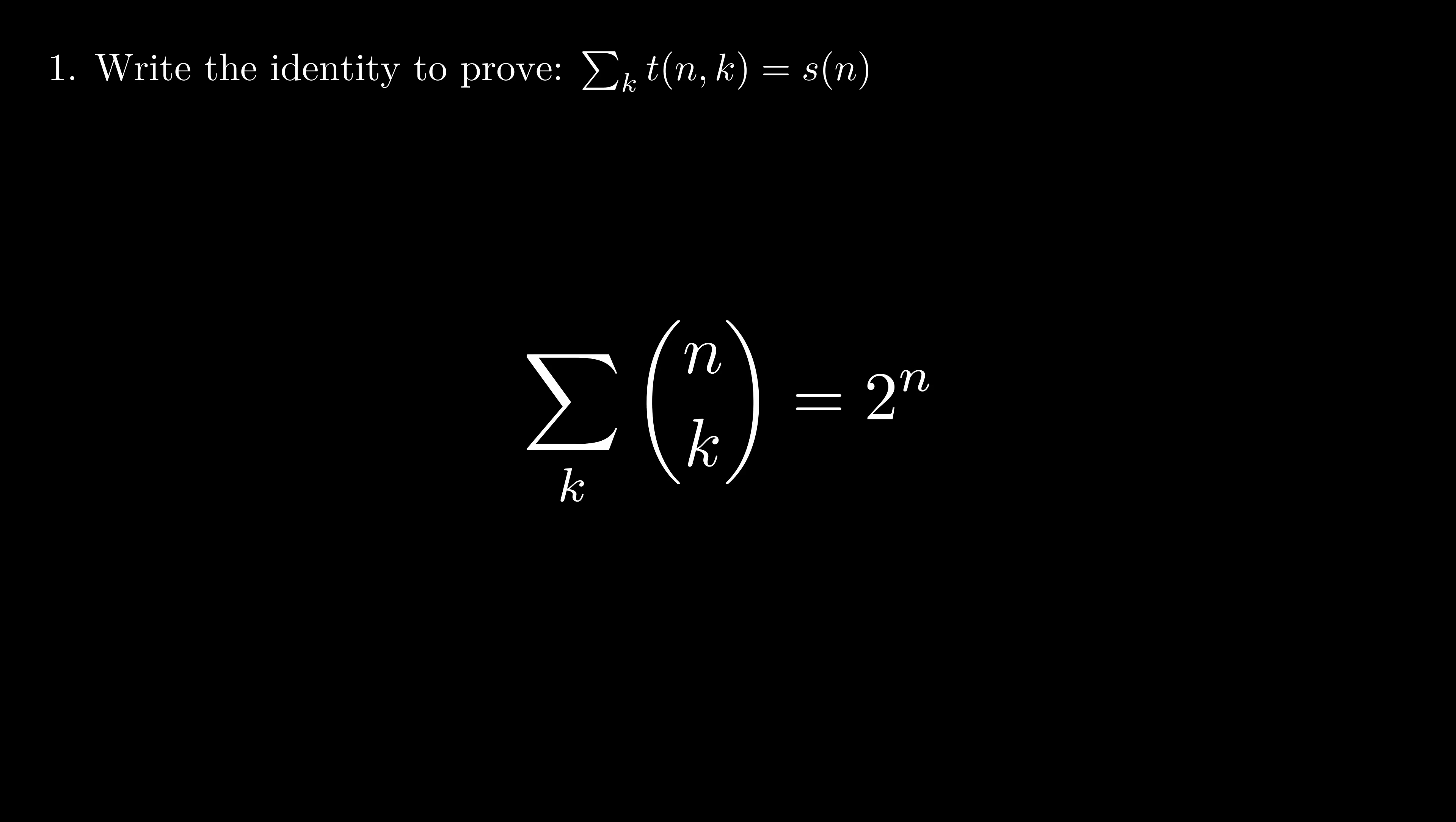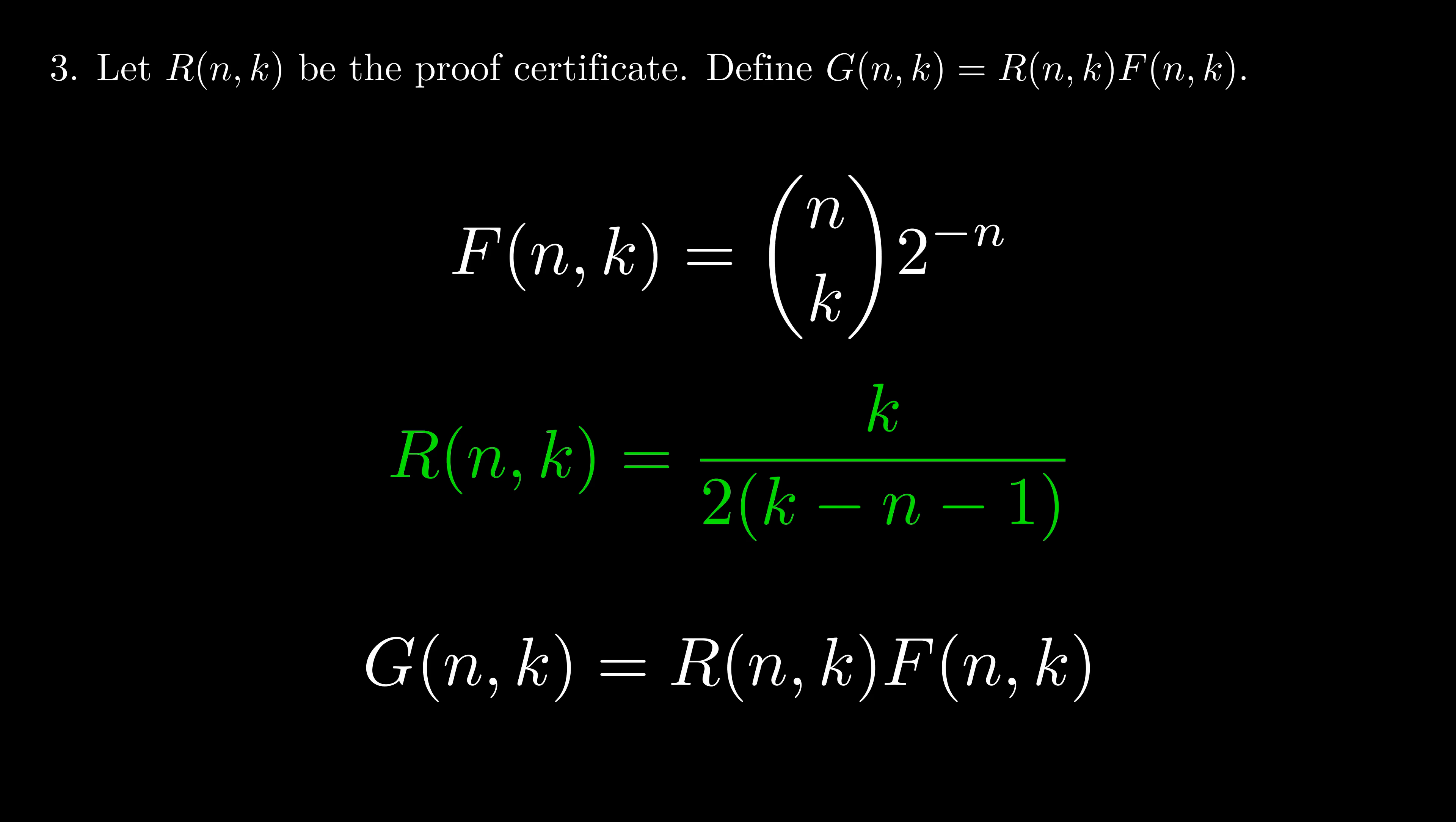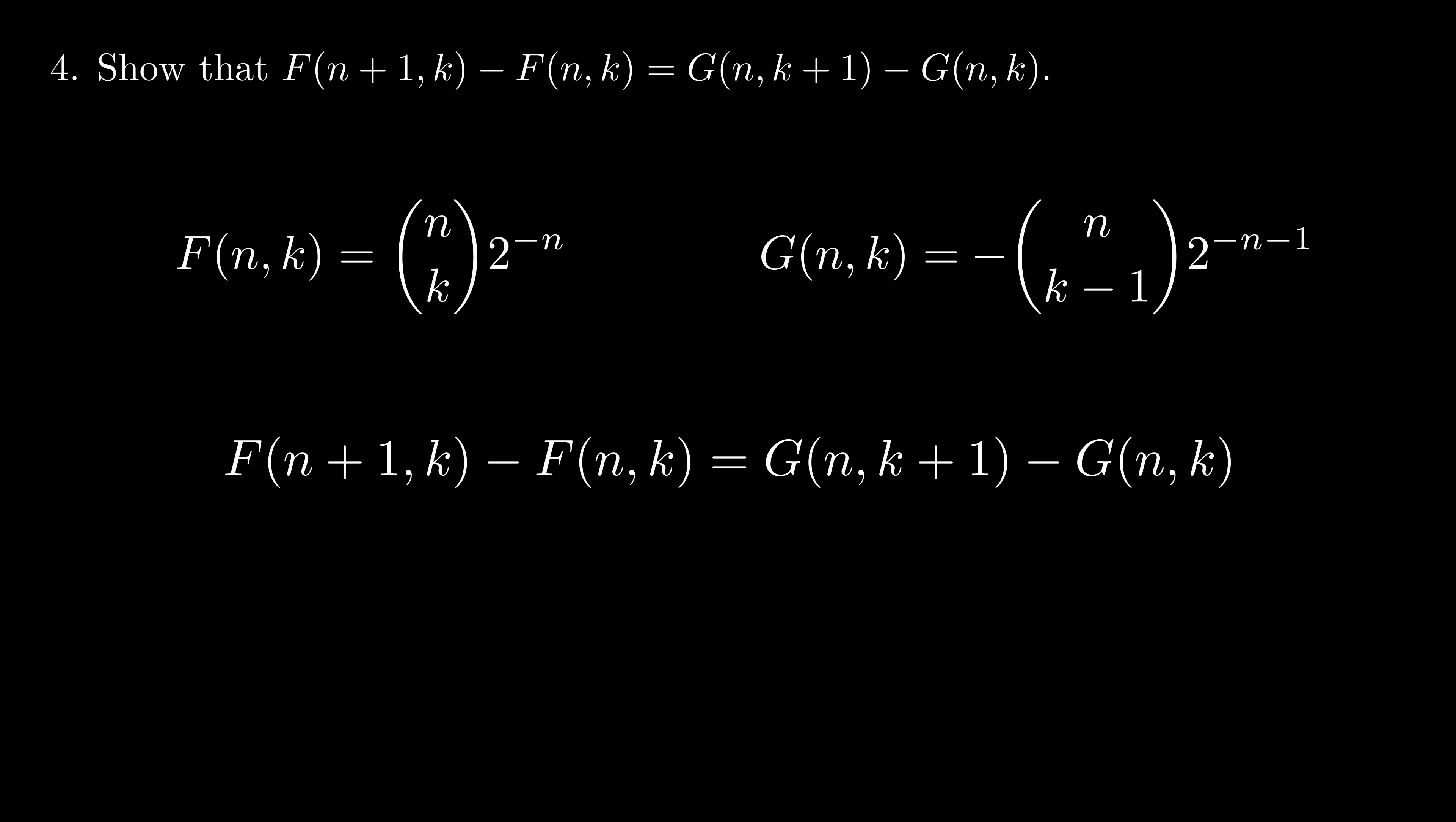Let's take a look at an example. Step 1. We write the identity that we want to prove. Step 2. We divide both sides by the right side and define our f function. Notice that we only need to prove this identity now. Step 3. Write out our proof certificate as a function r, and define g as the product of r and f. Throughout this video, I will shortcut a lot of the algebra, but feel free to check it yourself if you like. The functions f and g now form what we call a WZ pair. Step 4. We plug our functions f and g into this equation and verify that it is true. Although this looks very intimidating, this is a very routine task that computer algebra systems already know how to prove.